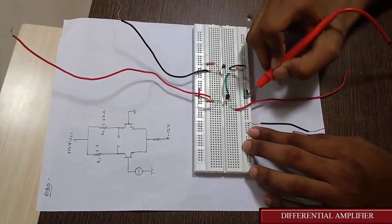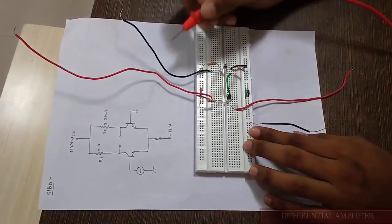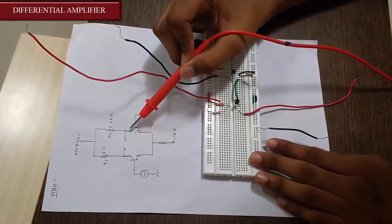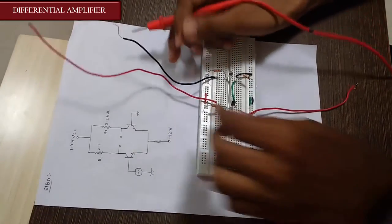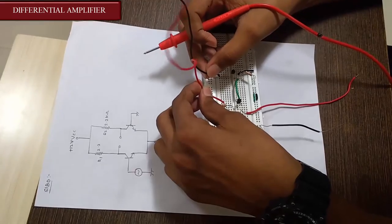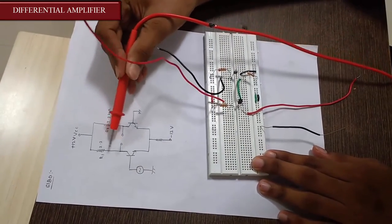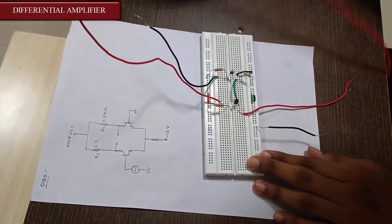The output is obtained from the collector terminals of the transistors. These two wires represent the output from the differential amplifier. VCC is given to the collector inputs with resistors of 2.2K in between.